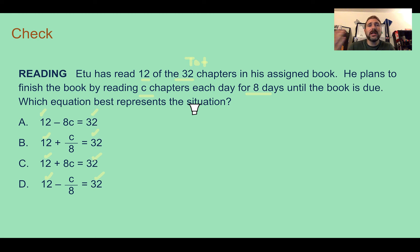Plus what he still needs to read. So this minus here and that minus here aren't going to work. So D and A can't be the correct answer because we're not taking away what he needs from what he already does. We're adding it to what he's already done.